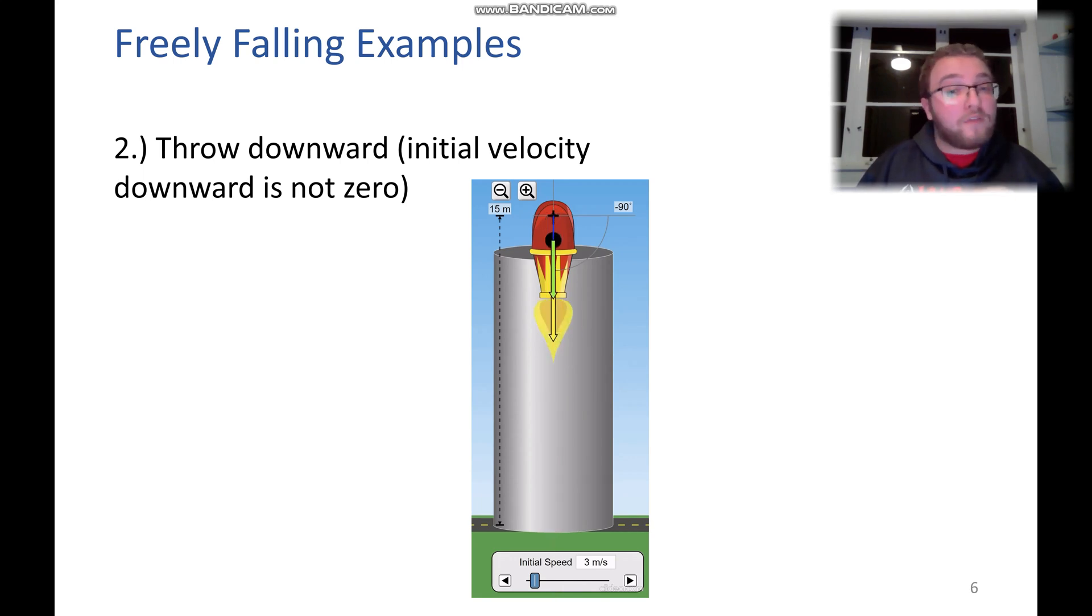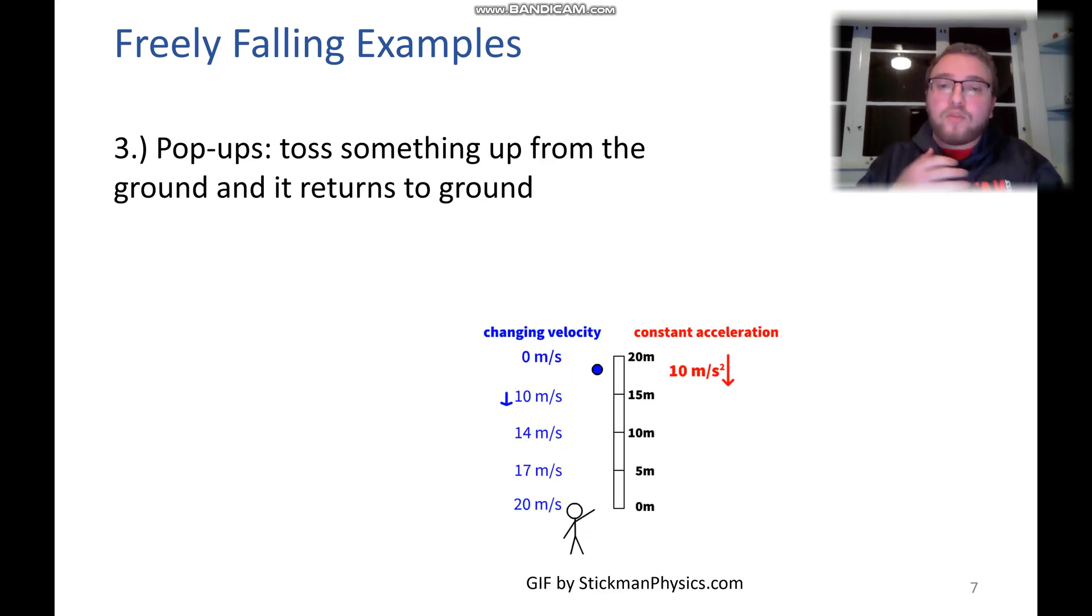Our yellow vector, which is the acceleration, stays constant. The last type of example we're going to talk about is what I like to call a pop-up. That's when something is tossed or thrown straight upwards from the ground and then it goes up and what goes up must come down.